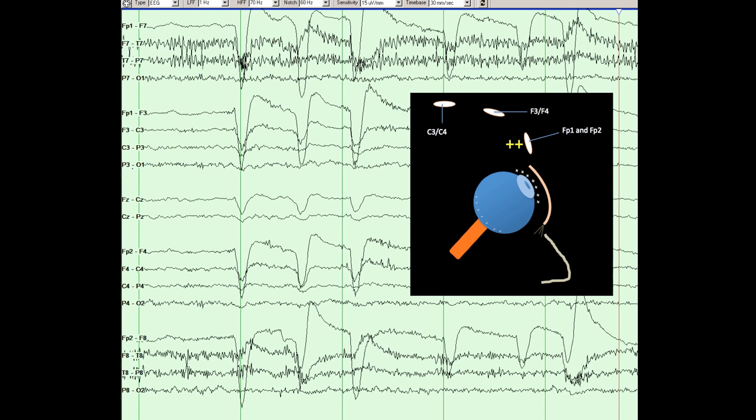On EEG, this results in a very large deflection in the frontal polar electrodes on both sides, indicated here.